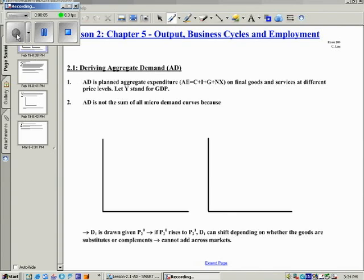Lesson 2 Chapter 5: Output, Business Cycles, and Employment. Section 2.1: Deriving Aggregate Demand.